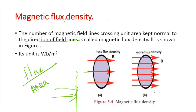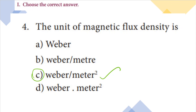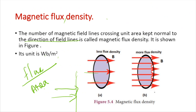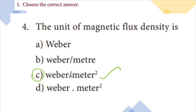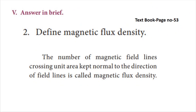We discussed the concept of magnetic flux density. Now for the textbook question: the unit of magnetic flux density — based on the definition from textbook page 53, the number of magnetic field lines crossing unit area kept normal to the direction of field lines is called magnetic flux density. The third answer option is the correct answer for its unit.